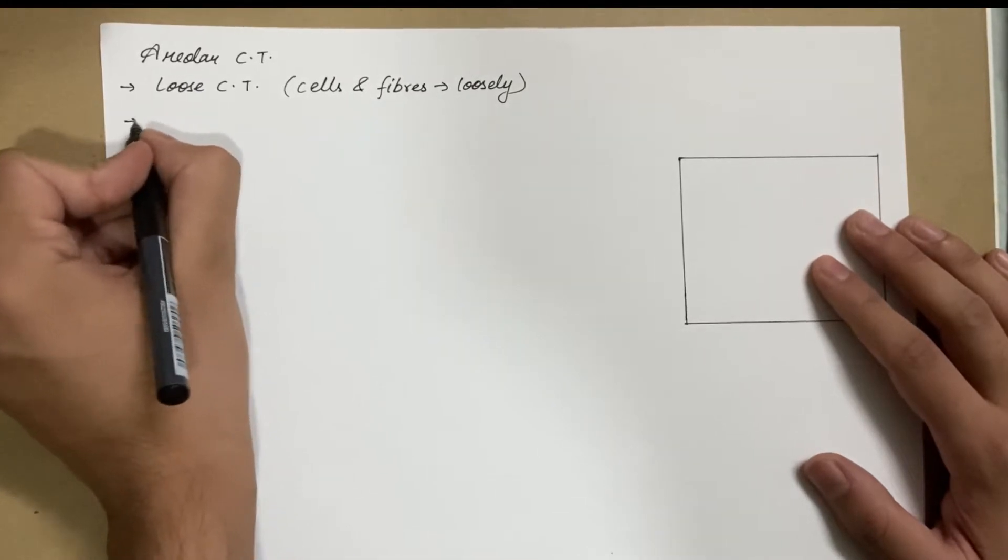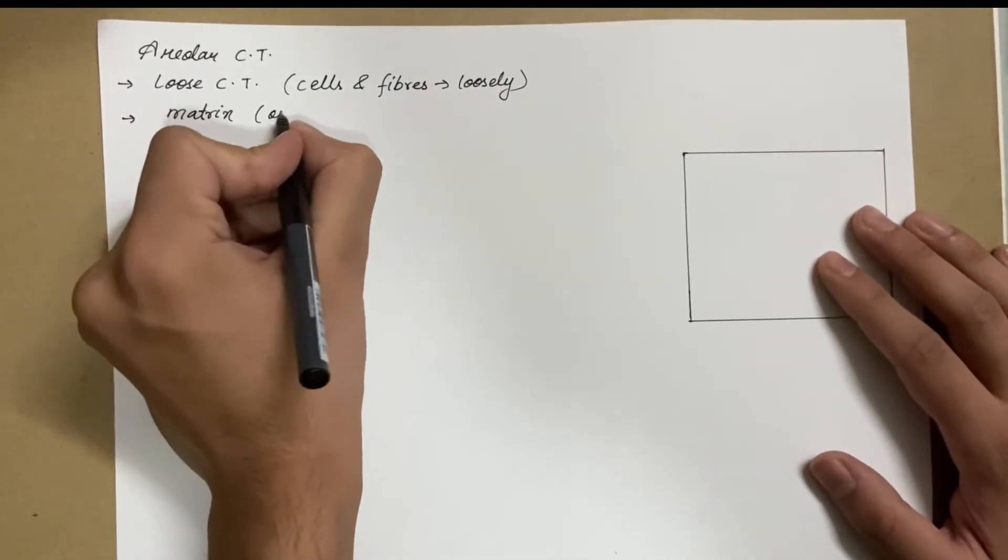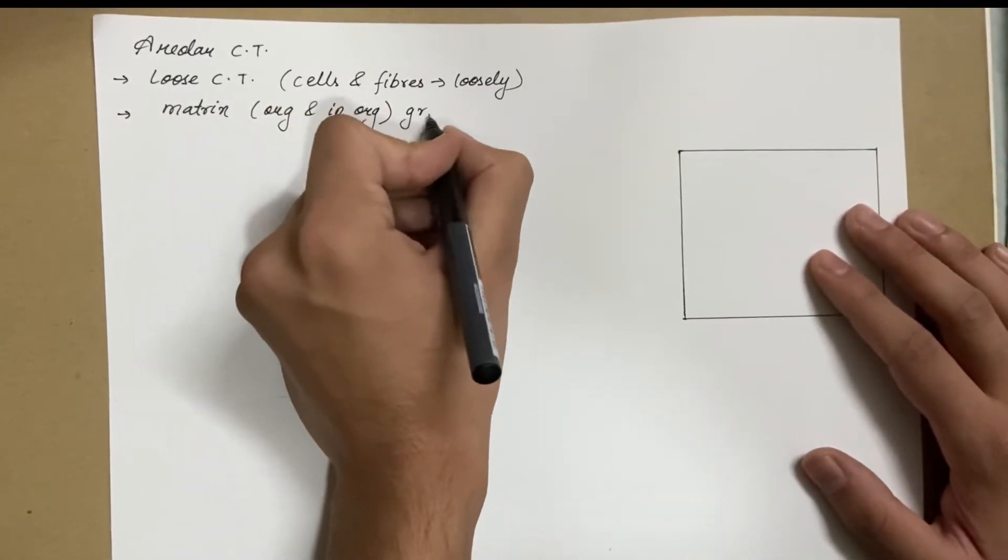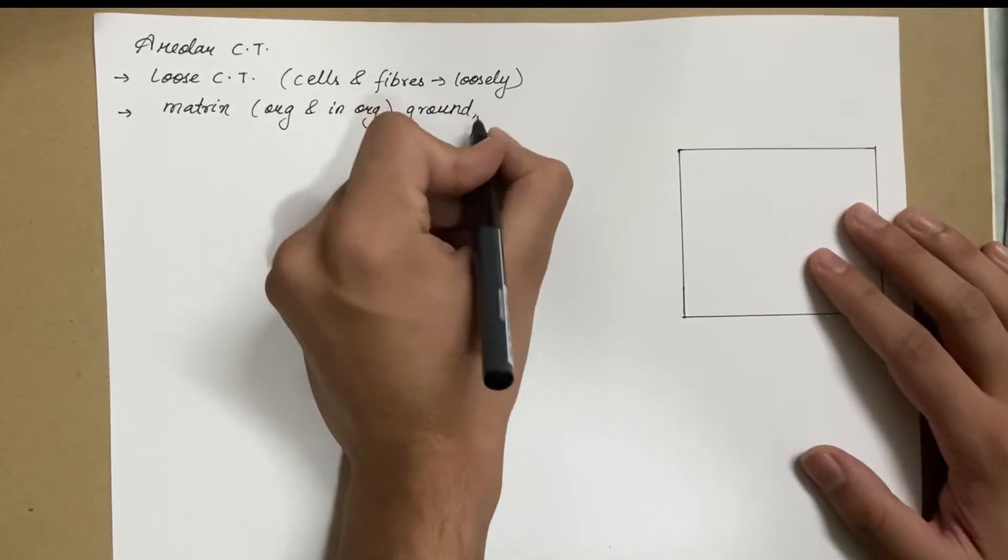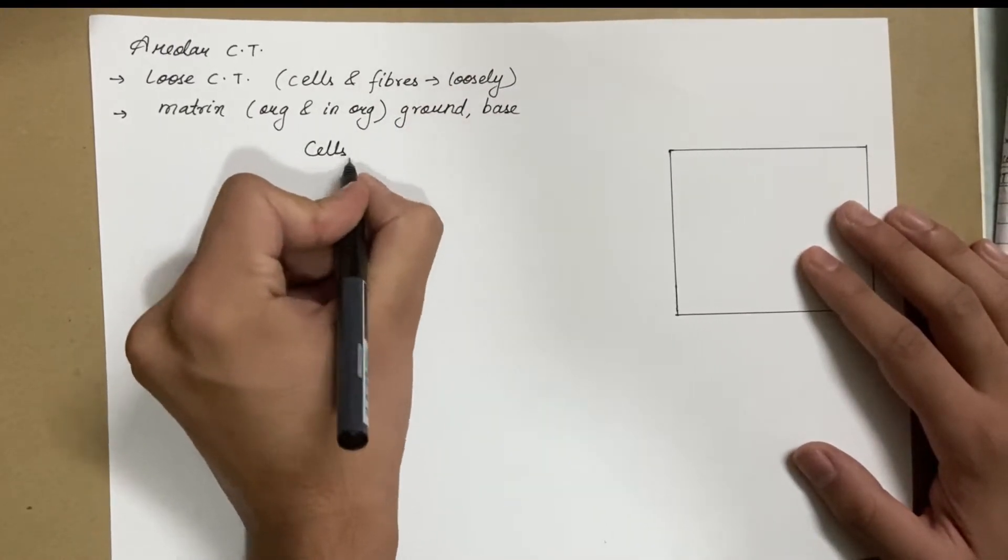It consists of two major parts: the matrix and the cells. The matrix consists of organic and inorganic substances and forms the ground or base for any connective tissue. The cells are of three major types present in areolar connective tissue.